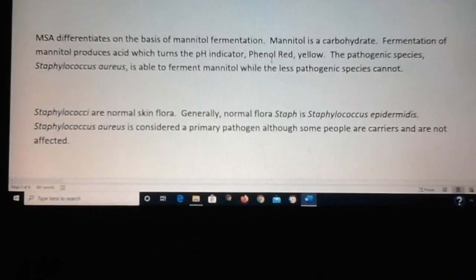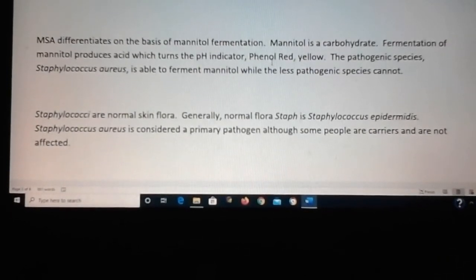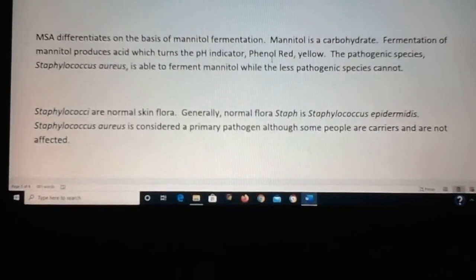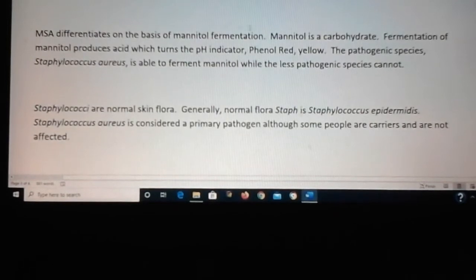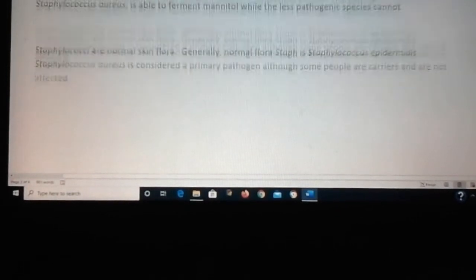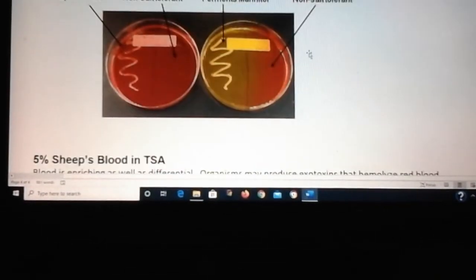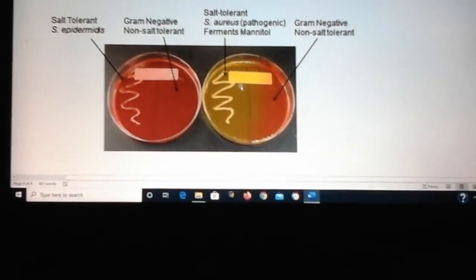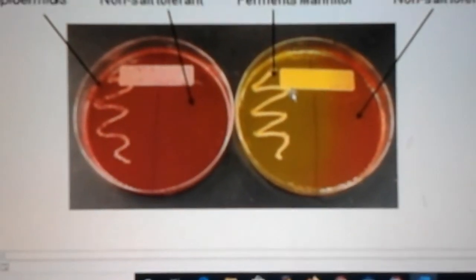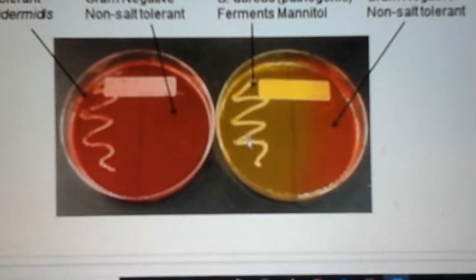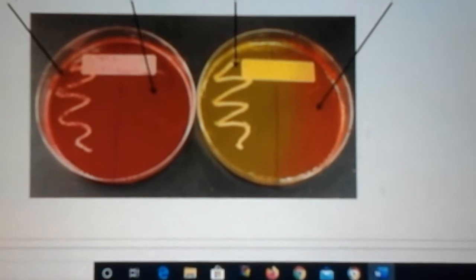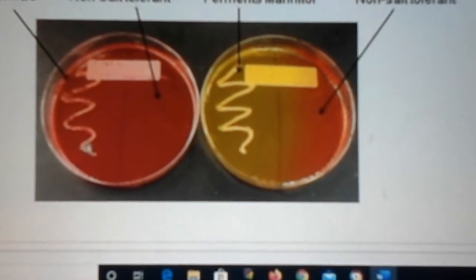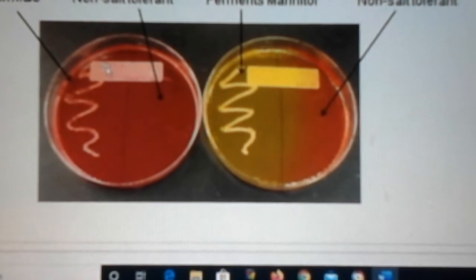Phenol red turns yellow if an acid is produced. So if the bacteria ferments the mannitol, an acid gets produced and the media turns yellow. On this MSA plate, you can see Staph aureus can grow very well and produces an acid due to fermentation, whereas Staph epidermidis on the left-hand side grows well but does not ferment the mannitol.